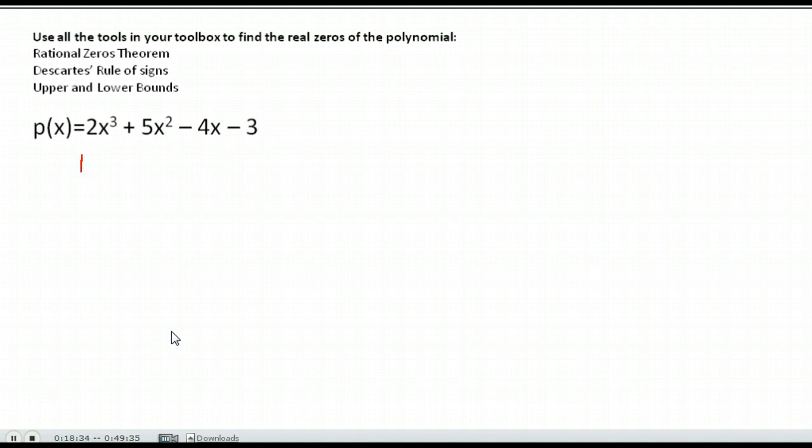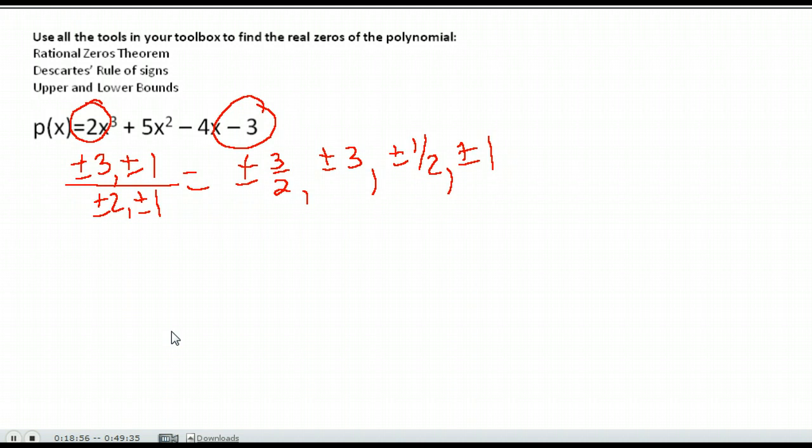Next question. We're going to start the same way. We're going to use the rational zero theorem. We're going to write down our possible rational zeros. So we put the factors of 3 over the factors of 2, and we write down those combinations. So we have 3 over 2, 3 over 1 would be 3, and then we have 1 over 2, and 1 over 1 would be 1. So here's our eight possibilities. We're going to go ahead and test those. So we just choose one to start with. We write down our synthetic division. What one do you want to do? I'm going to try one again, see if one works. Go ahead and go through the process of the synthetic division.